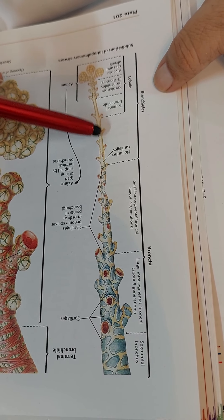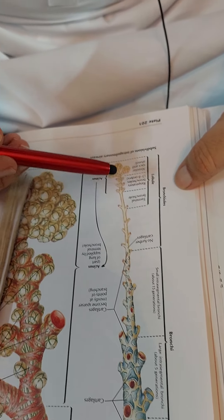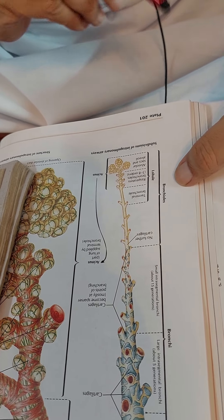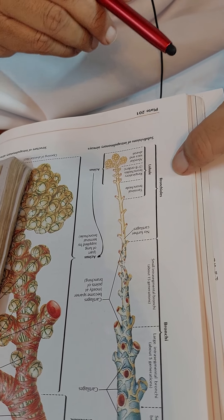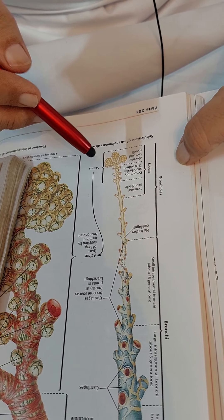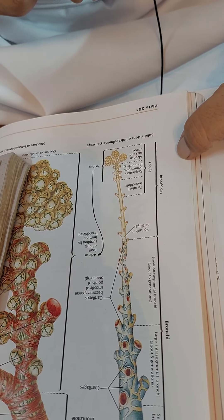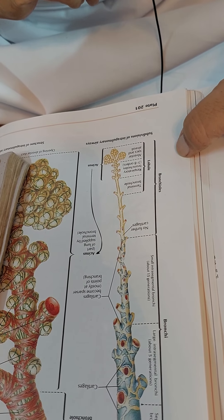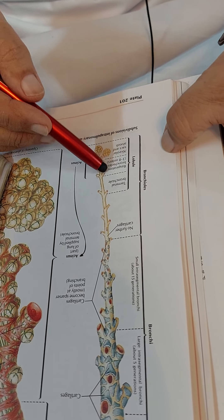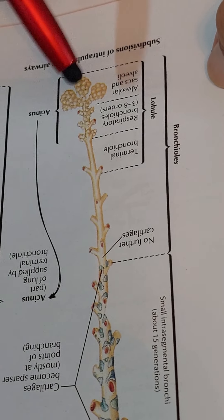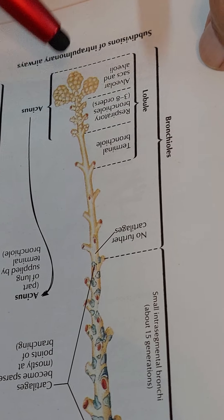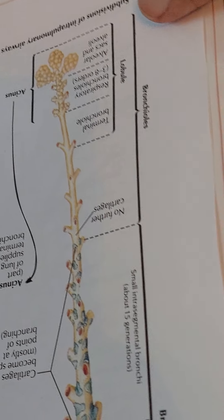The bronchioles divide and re-divide to form the terminal bronchioles, and the terminal bronchioles then divide into respiratory bronchioles. You can see some of the alveoli where exchange of gases can also occur in the respiratory bronchioles.